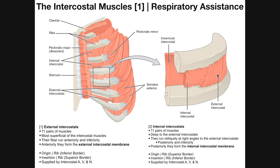If we move deep to the external intercostal muscles, we reach the middle layer, which is the internal intercostal muscles. These run obliquely at right angles to the external intercostals. As we move inferiorly, the fibers tend to run more laterally, and importantly, as you move inferiorly, the fibers actually move more posteriorly — whereas for the external intercostals, those fibers tended to move more anteriorly.